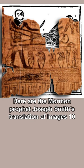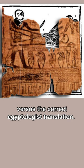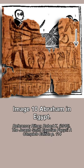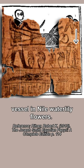Here are Mormon prophet Joseph Smith's translations of images 10 through 12 of facsimile 1 versus the correct Egyptologist translation. Image 10: Smith's translation is 'Abraham and Egypt.' The correct translation is a typical offering stand with a spouted vessel and Nile water lily flowers.